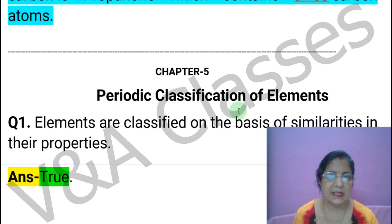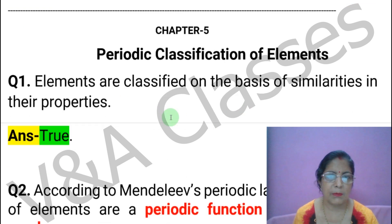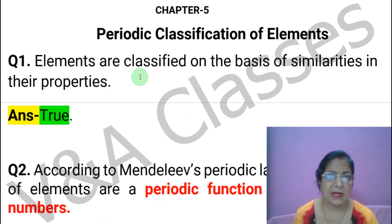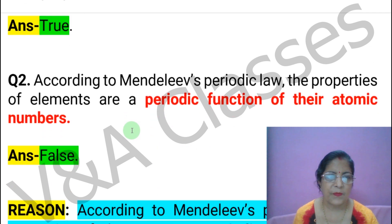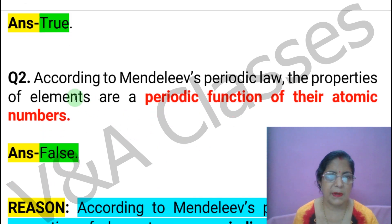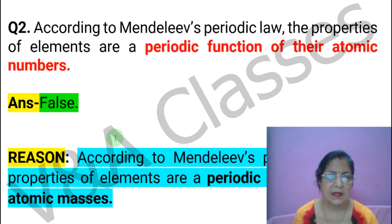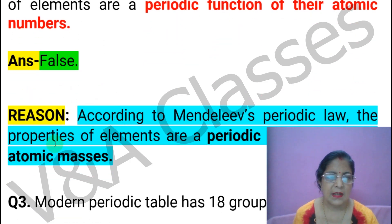Now Chapter 5: Periodic Classification of Elements. First statement: Elements are classified on the basis of similarities in their properties. This statement is TRUE. Next statement: According to Mendeleev's periodic law, the properties of elements are a periodic function of their atomic numbers. This statement is FALSE.